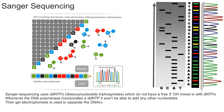In this video I'm going to explain what Sanger sequencing is and how it works. It's first important to talk about some background information about why people do Sanger sequencing. Sanger sequencing is essentially used to determine the sequence of DNA for a particular segment of DNA.